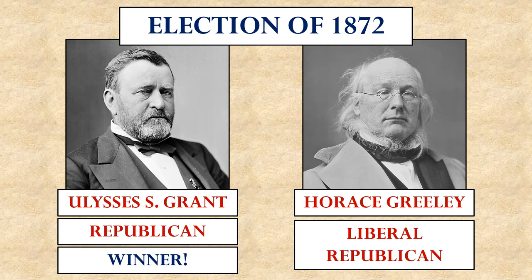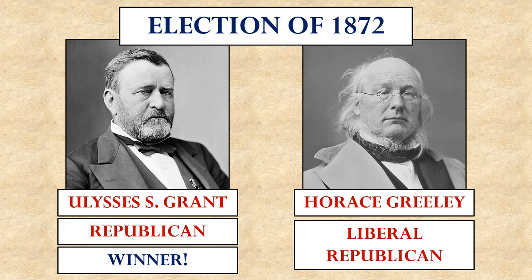Ulysses S. Grant ran for re-election in 1872 and again easily won. His opponent, Horace Greeley, wasn't even a Democrat — the Democratic Party was in such disarray that he was a splinter off of the Republican Party, and he actually died between the election and the meeting of the Electoral College. The Republicans had clear, absolute control of the government and were using it to force the South to reform itself into what the Radical Republicans wanted.